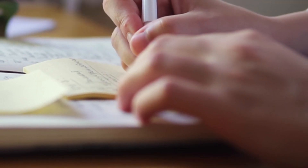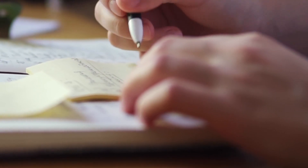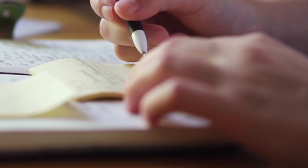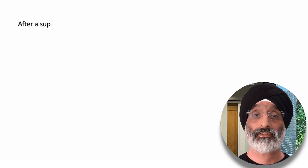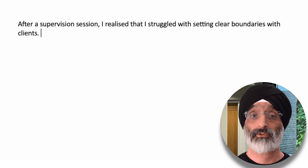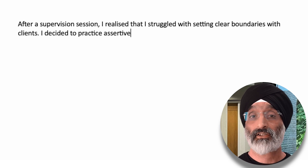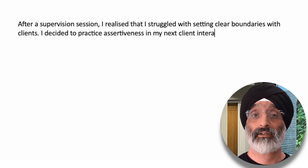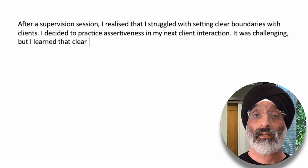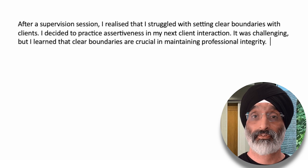Technique number four emphasises practice. As a social work student, consistent practice is vital. Start with regular journaling — reflect on your interactions with clients, supervision sessions or ethical dilemmas you encounter. For example, you could write: 'After a supervision session, I realised that I struggled with setting clear boundaries with clients. I decided to practice assertiveness in my next client interaction. It was challenging, but I learned that clear boundaries are crucial in maintaining professional integrity.'